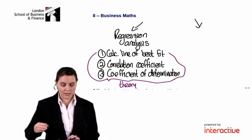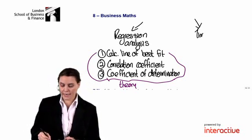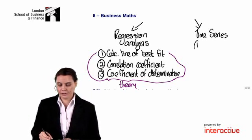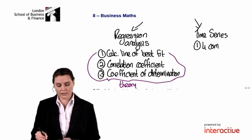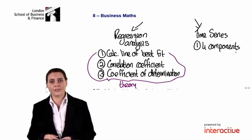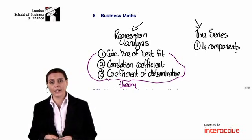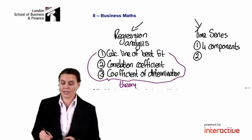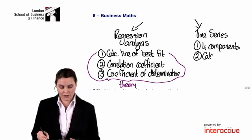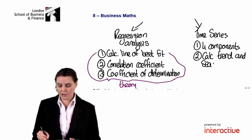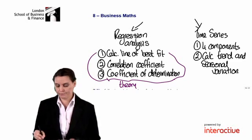The second statistical technique is time series. Within this then, you need to understand the four components of a time series. Remember, we have our trend, our seasonal variation, cyclical variation, and our random variations. In terms of calculations, you would only have to calculate the trend and the seasonal variation.